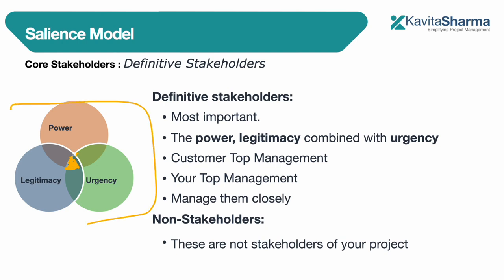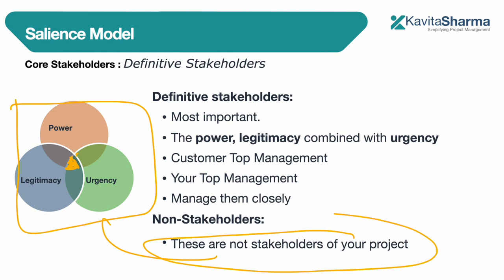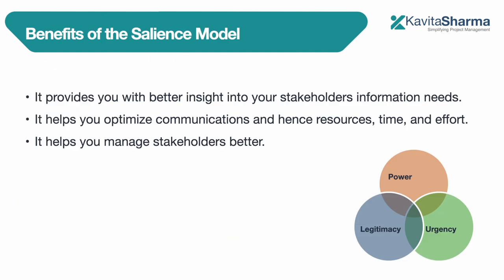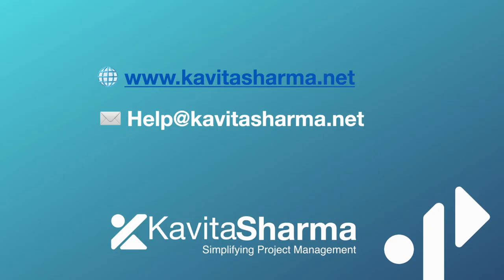Anyone outside these seven types is a non-stakeholder — you don't need to worry about their needs or create reports for them. The benefit of the salience model is that it identifies which stakeholders are most important, what kind of importance to give each, and how to handle them — ultimately helping you manage stakeholders better. My name is Kavita Sharma and you can reach me at help@kavitasharma.net. Thank you and have a nice day.